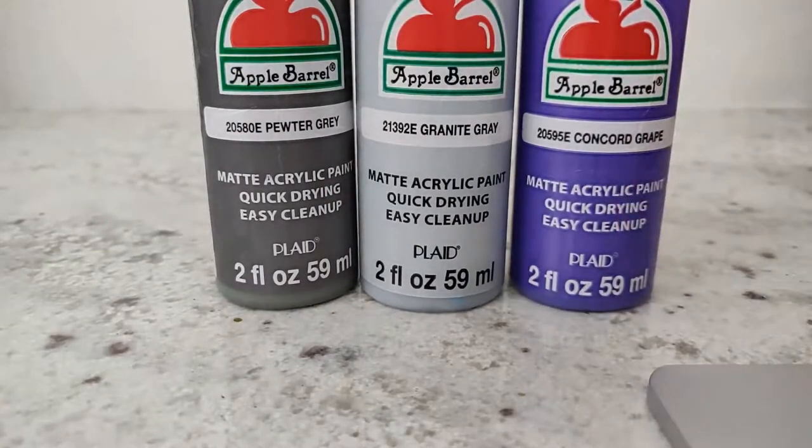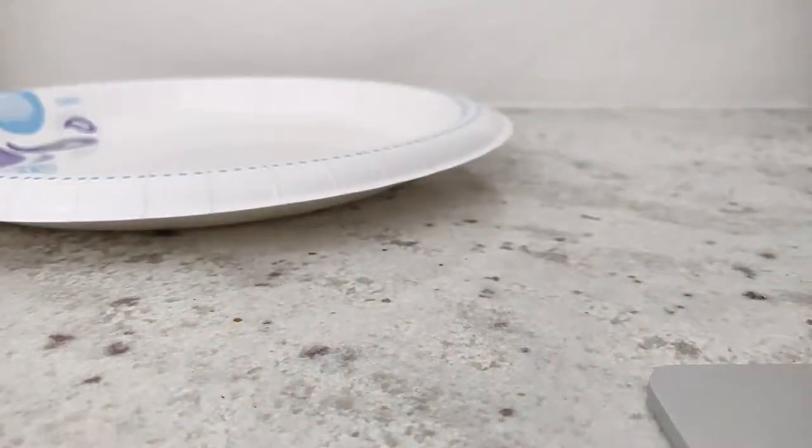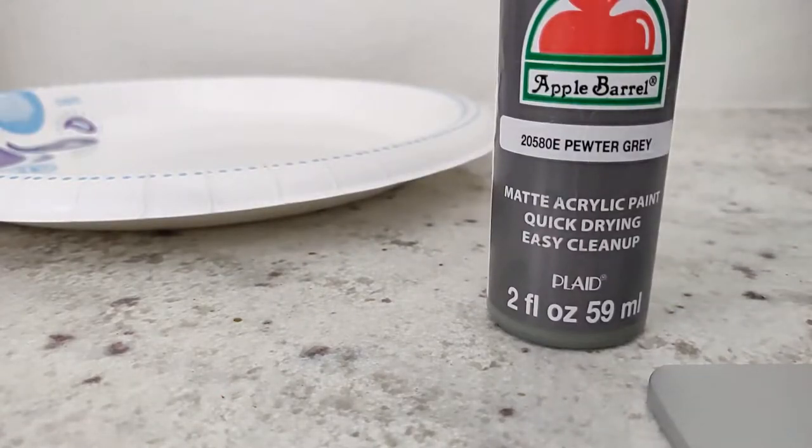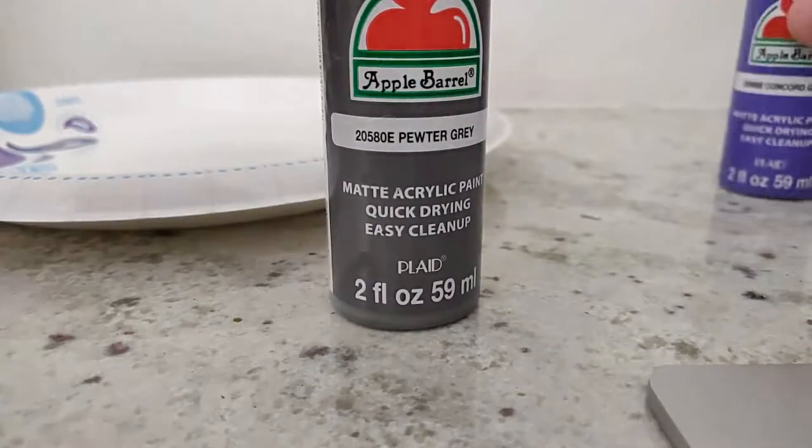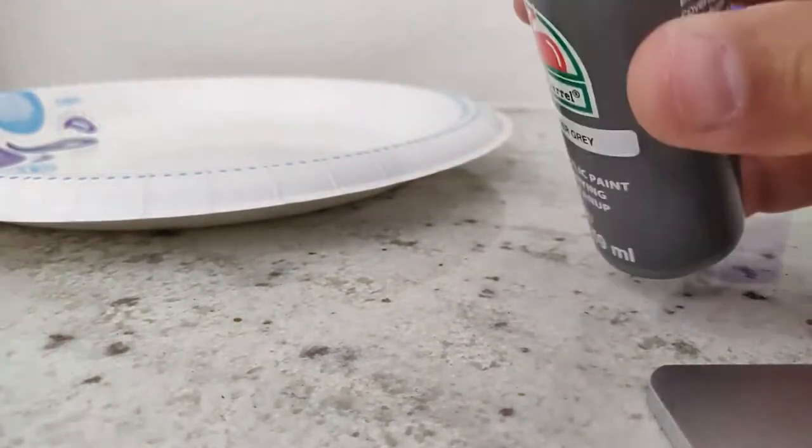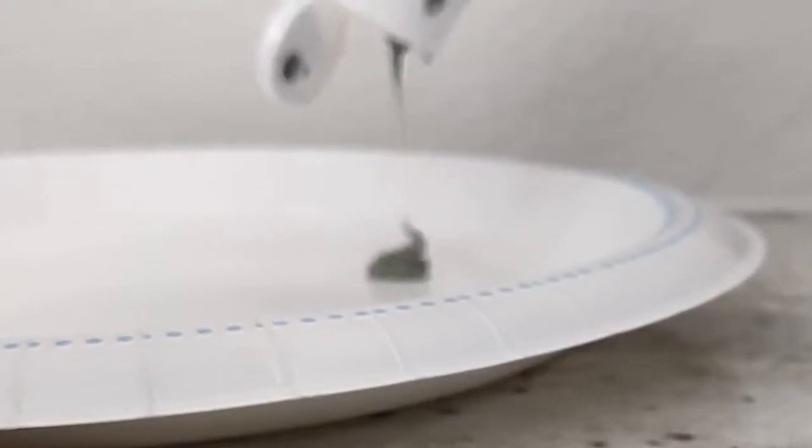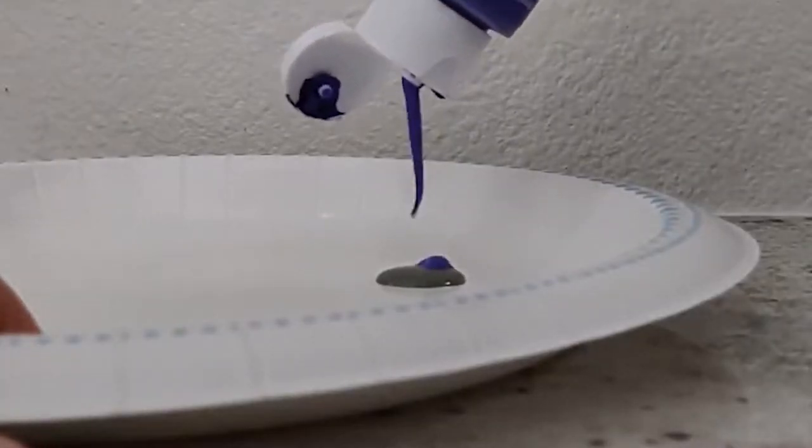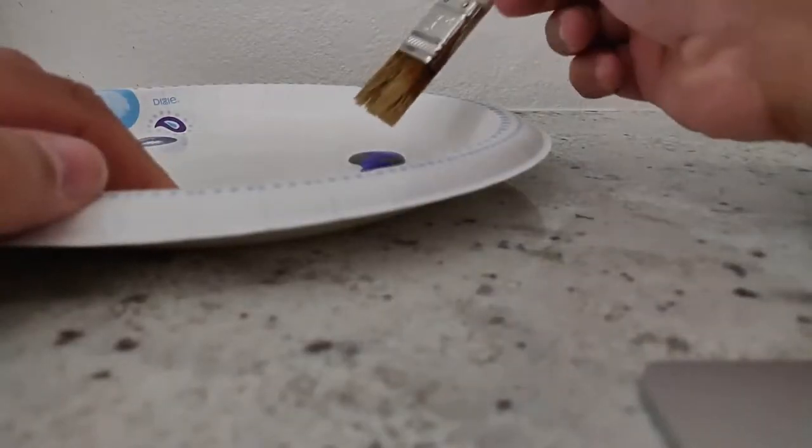Quarter Gray, Granite Gray, and Concord Grape - cheap Apple Barrel paint from Walmart, 50 cents each. We're starting with Porter Gray and Concord Grape, and we'll be doing about a 70-30 mix of Porter Gray as 70% and 30% of Concord Grape. This will give us a very dark purple color as the base.